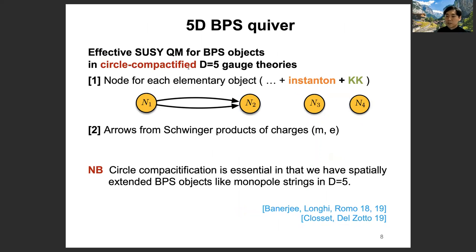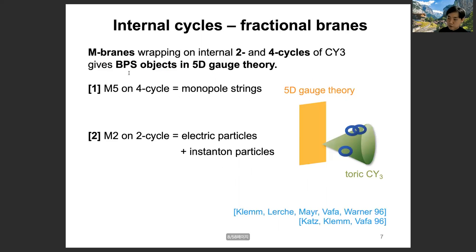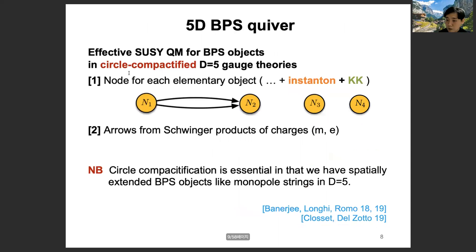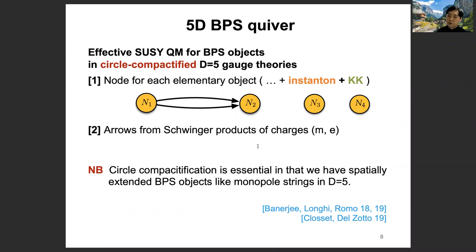Throughout this talk, I will consider five-dimensional gauge theory which is circle-compactified, so we can wrap every monopole string — which has a two-dimensional worldvolume — around the compactified circle. So effectively, in the 4D KK theory made from the compactification of the 5D theory, every BPS object is point-like. The BPS quiver again involves nodes representing elementary objects and arrows defined by Schubinger products between charges.